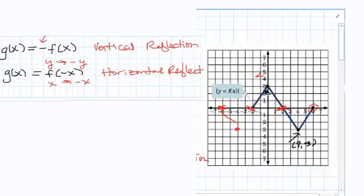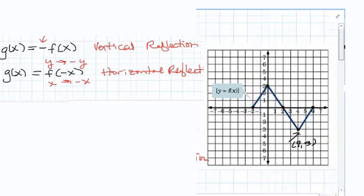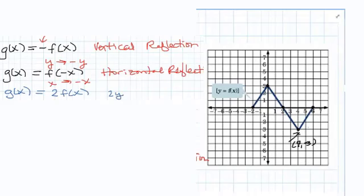And then the last thing that we did was stretch or compress, which happens when we multiply the function by a value. So let's say I wanted to, we could have g of x equal 2 times the original function f of x. Since the 2 is on the outside of the function, the outer part affects the y-coordinate, you'd be doubling every y value. So 2 times every y. This gives us a stretch away from the x-axis.